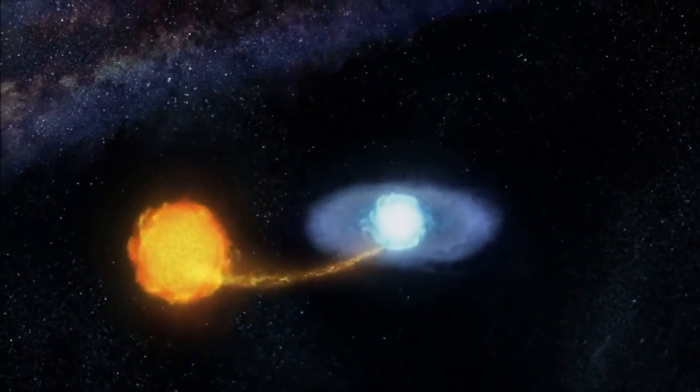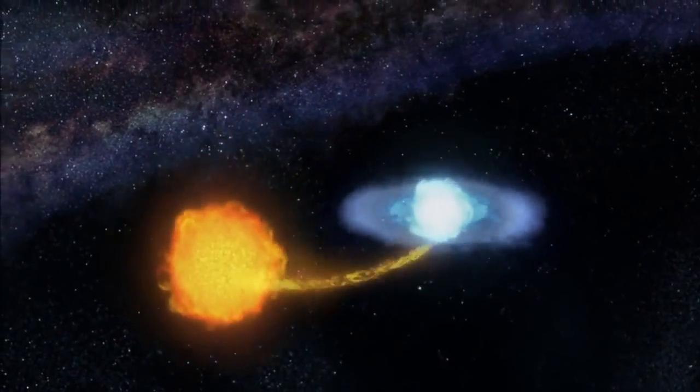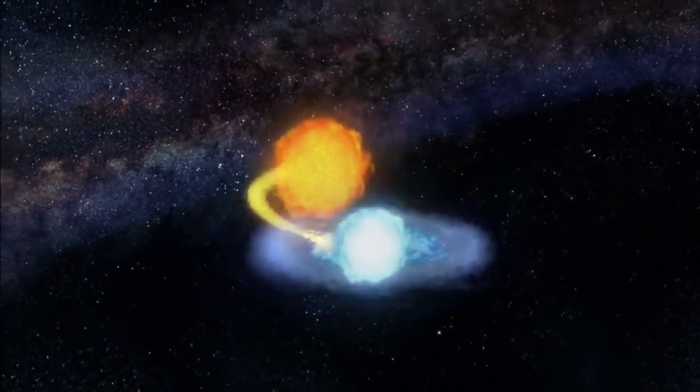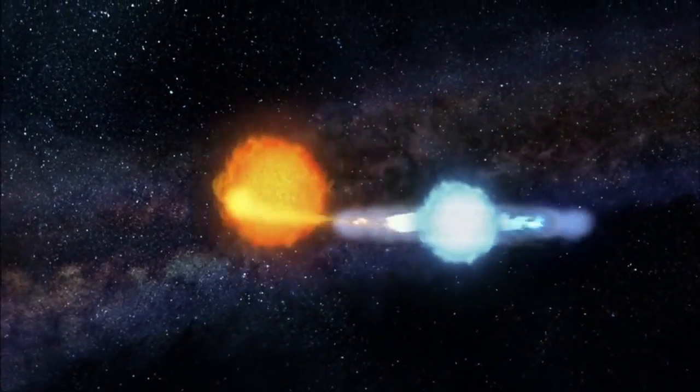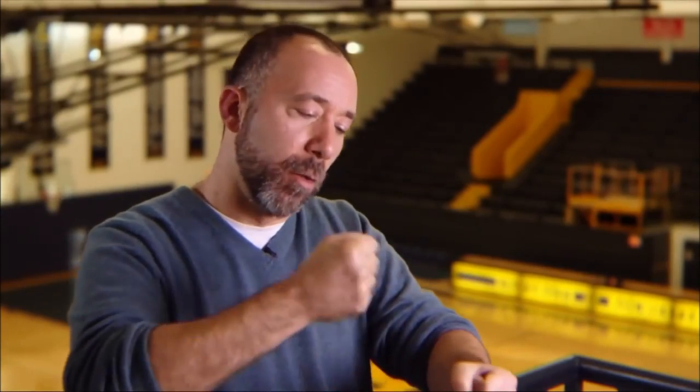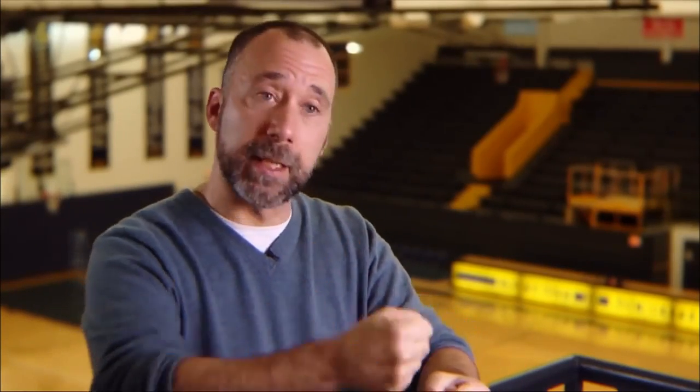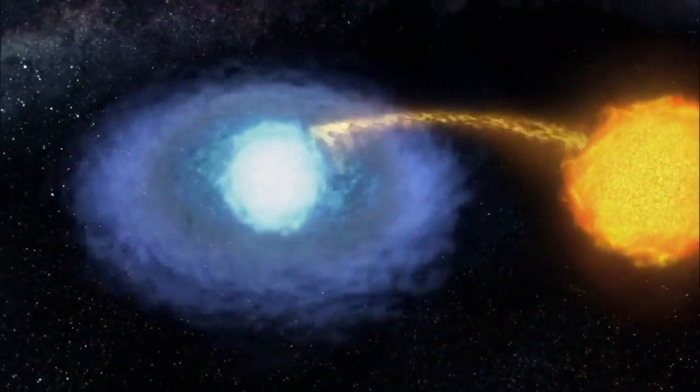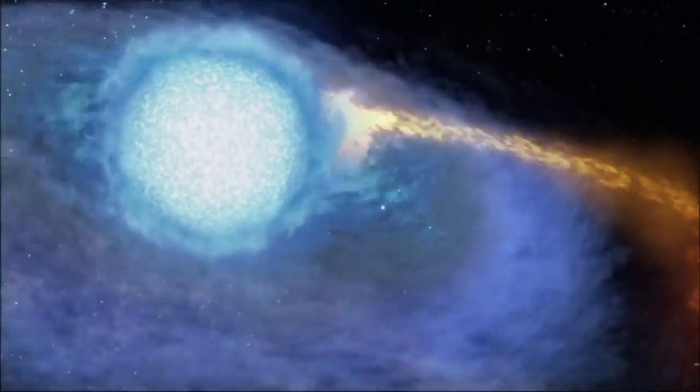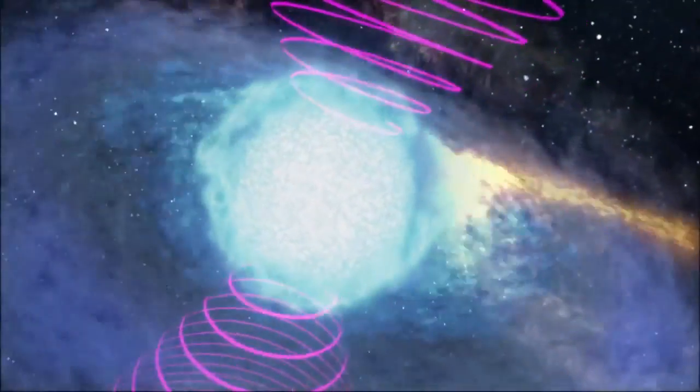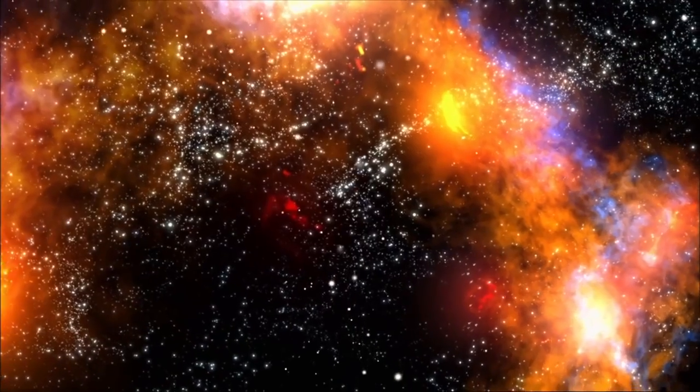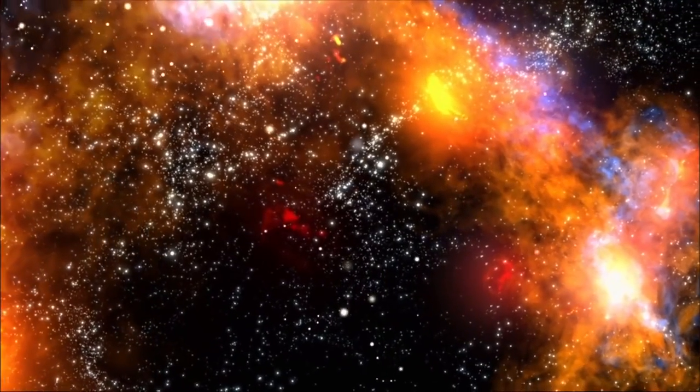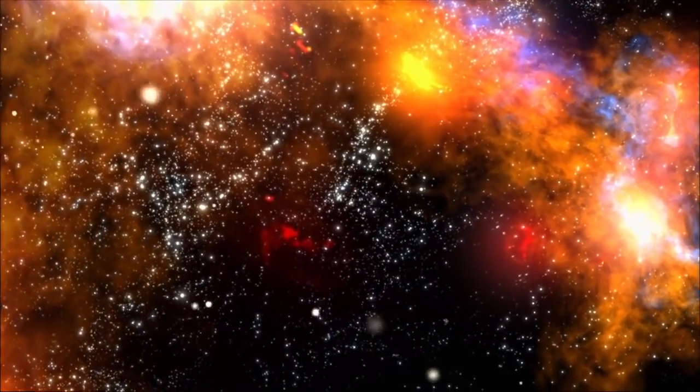But a dying star doesn't have a disk of material falling into it. That is, unless it's a part of a binary pair, two stars orbiting around each other. Binary pairs are very common in the universe. As the two stars rotate around each other, one of the stars is giving up mass to the other. Material flows from one star to the other and you form an accretion disk. Magnetic fields appear in that accretion disk and material is blown off it just like in the other cases as well.